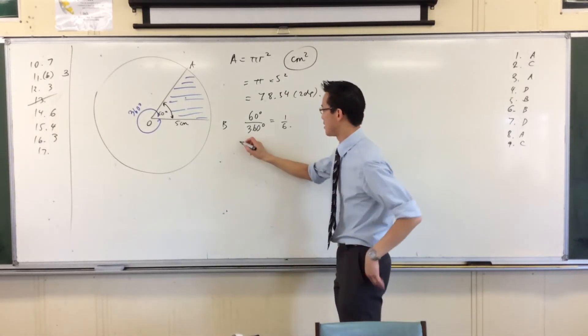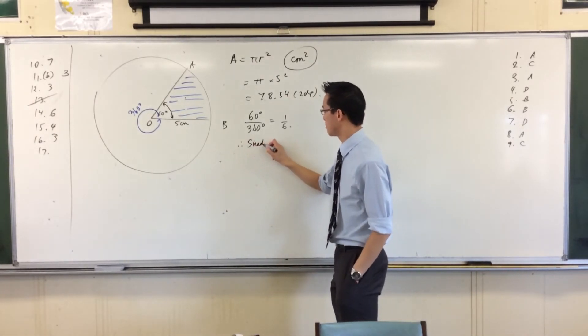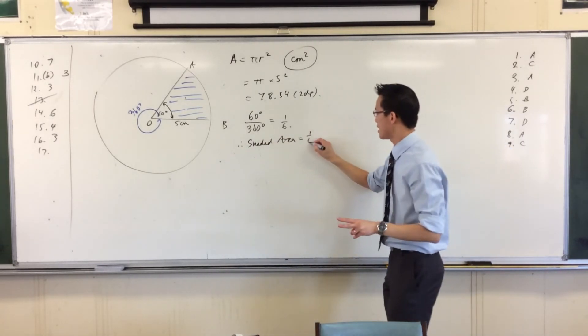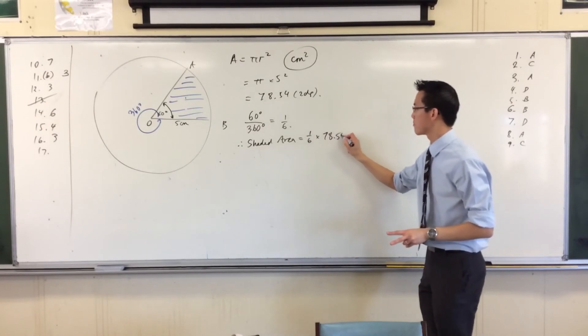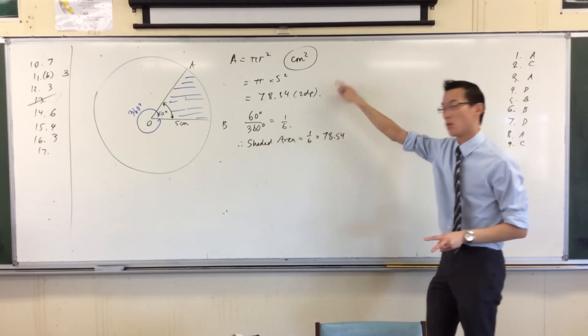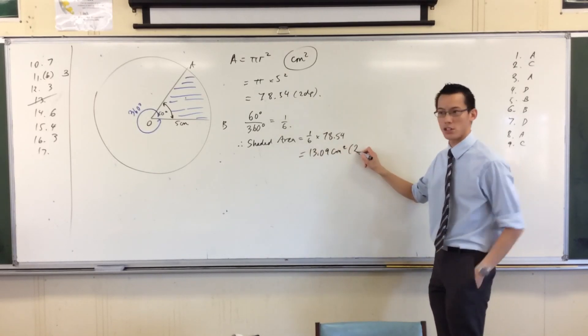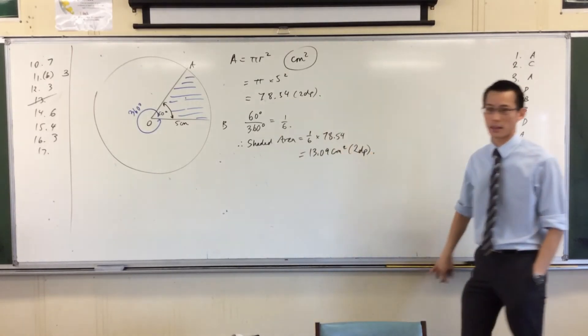So the way I would have written it is to say therefore, the shaded area is equal to, and here's where the second mark came in. So we're going to do a sixth times this whole area that we worked out before, which is 13.09 centimeters squared, because you went to two decimal places.